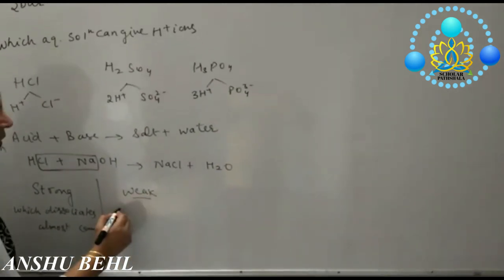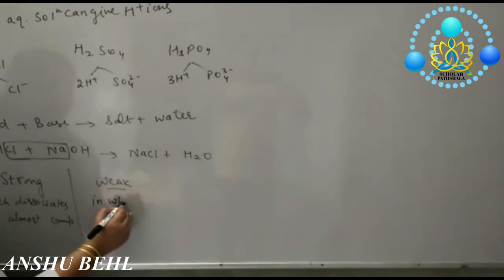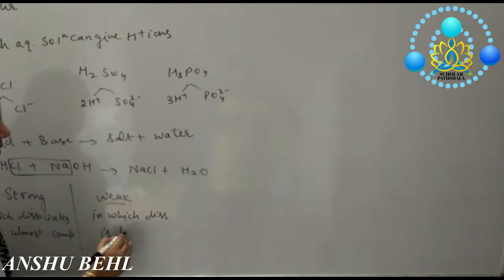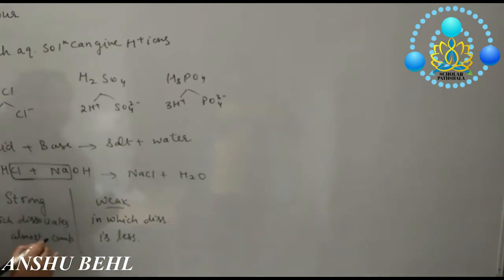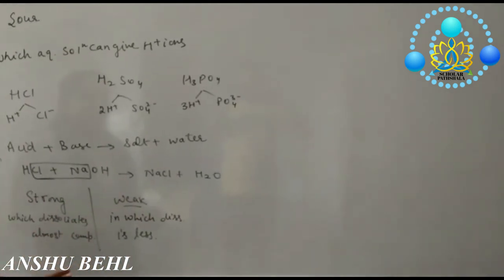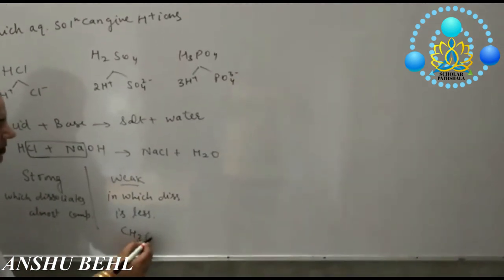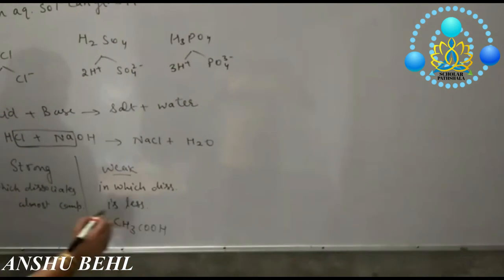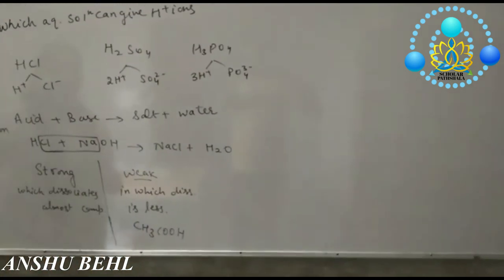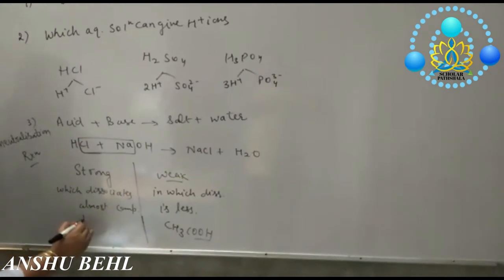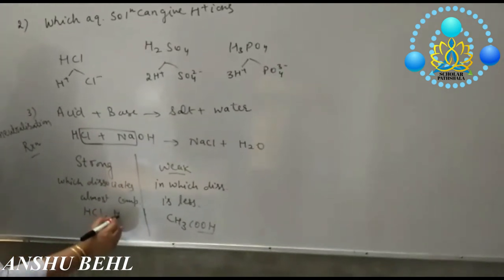And weak acid is a substance in which dissociation is less. If dissociation is less than 30%, it is termed as weak acid. Like at home you are using acetic acid as vinegar, it is weak acid. And strong acids are HCl, H2SO4.